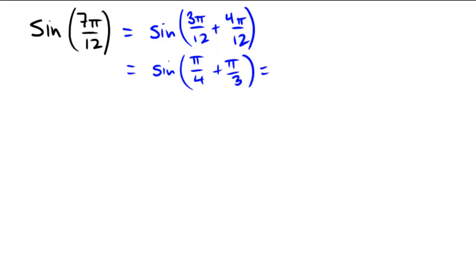And why did I change it into that? Because those are convenient numbers for our unit circle. Those are both in the unit circle. So using the sine sum formula, this would be sine pi over 4 cosine pi over 3 plus cosine pi over 4 sine pi over 3.